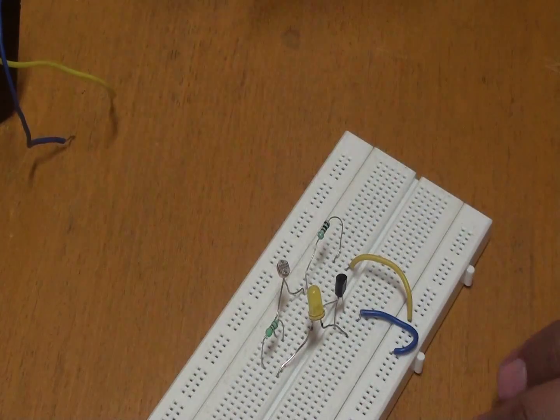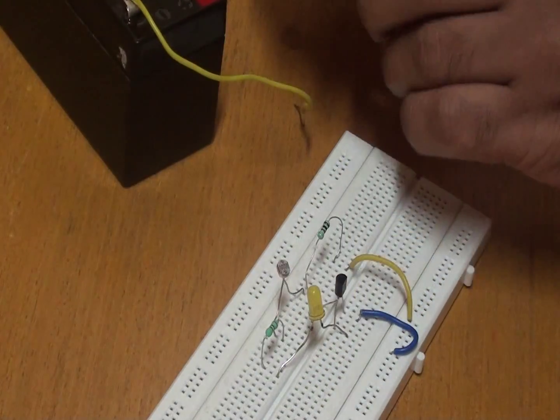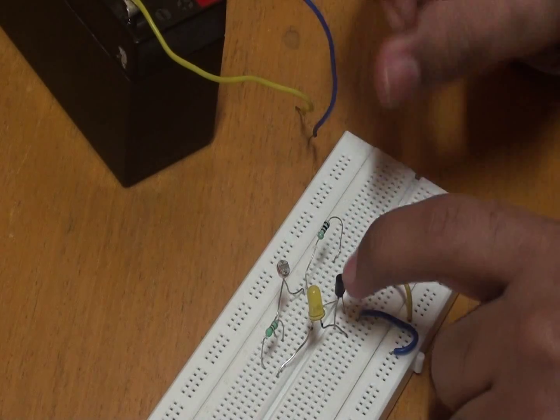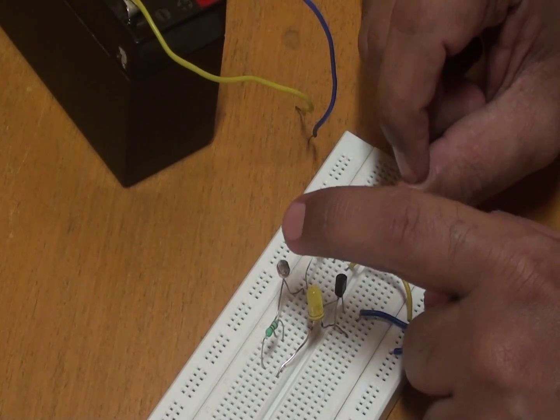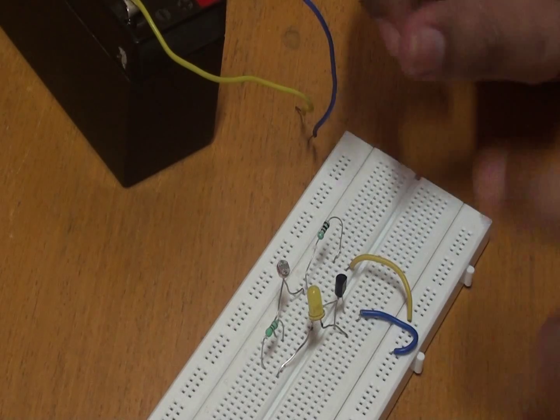So now we solve this. Now I am going to give the power supply and I will just check how this BC547 and this photo resistor work in conjunction.